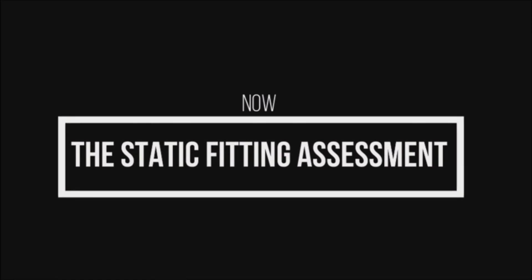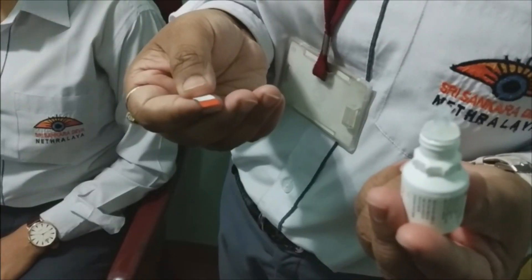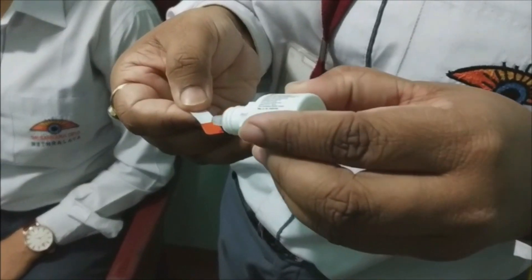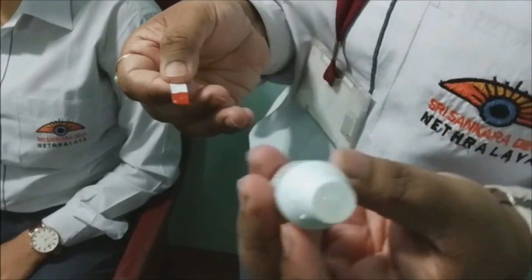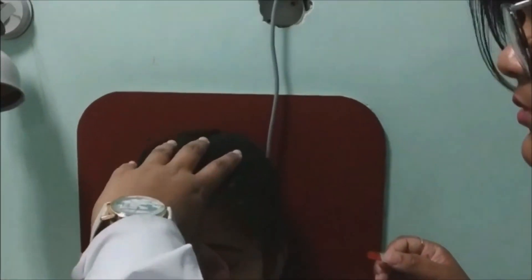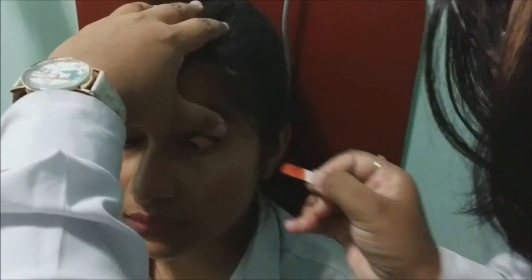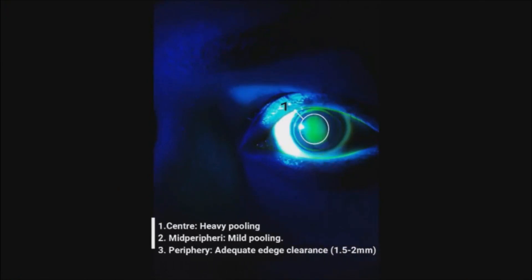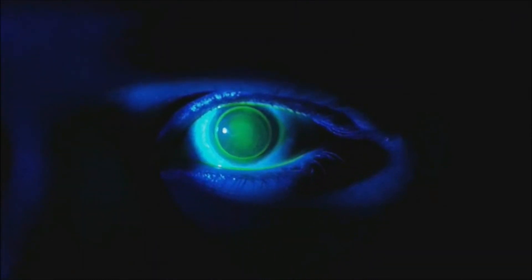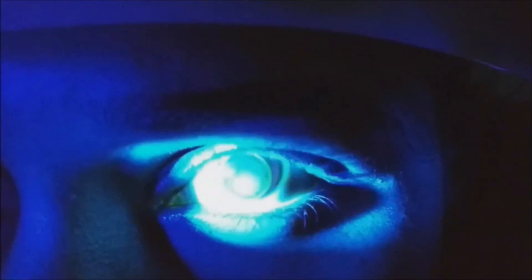Next moving on to the static fitting. We lift the upper right lid with the thumb of the left hand, and with the right hand holding the fluorescein strip, we stain the upper palpebral conjunctiva to assess the static fit. In static fit we check the center, mid periphery, and the periphery of the lens. In our case the lens center has heavy pooling, in mid periphery there is mild pooling, and the periphery has inadequate edge clearance of 1.5–2 mm.